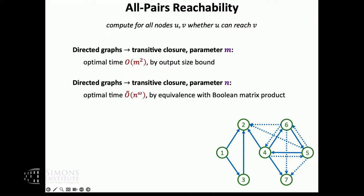So now we know the optimal running time for transitive closure: it's n to the omega. We don't really know what omega is exactly, but it's the exponent of Boolean matrix multiplication. So far so good — we understand the problem in terms of n and m. The database folks are also very interested in output size, so let's look at that as a parameter.